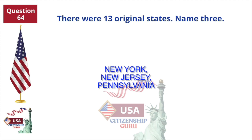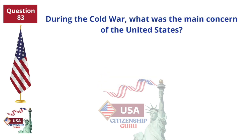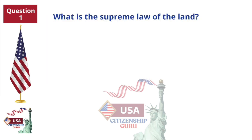There were 13 original states — name three. New York, New Jersey, and Pennsylvania. What is the supreme law of the land? The Constitution.